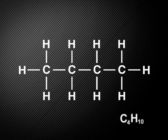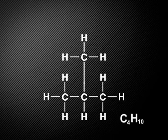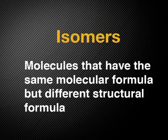Notice how each of the carbon atoms still has four bonds to other atoms — some of those bonds are between two carbon atoms. We can always put the molecule together differently to make a new molecule with a different name and different properties. We call these groups of molecules isomers. Isomers are molecules that have the same molecular formula but a different structural formula.